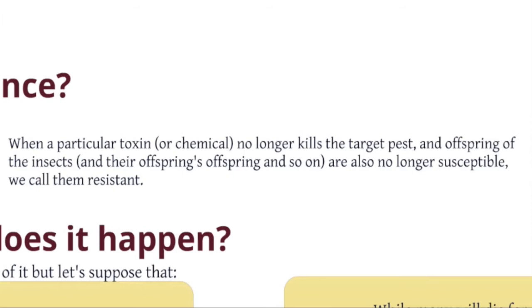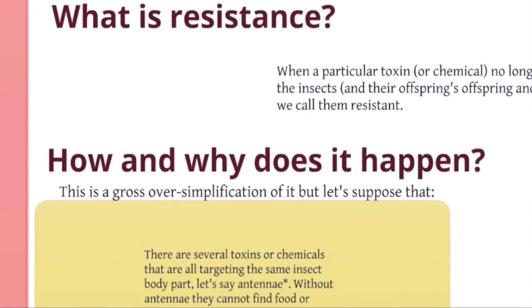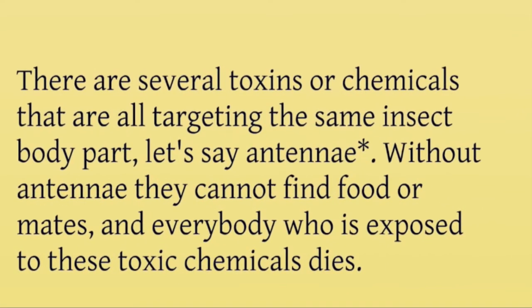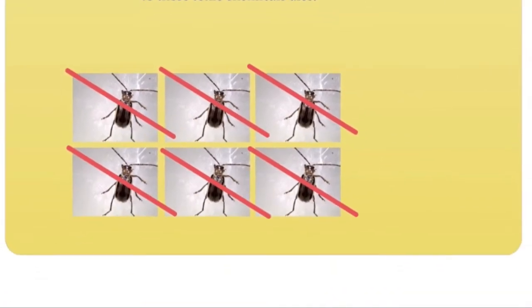So how does this happen? I'm presenting here a gross oversimplification just to illustrate the point. Let's suppose there are several toxins or chemicals targeting the same insect body part — let's say, for this example, antennae. Without antennae, insects cannot find food, they cannot find mates, and everybody who is exposed and susceptible to these toxins dies. This is the outcome when all individuals that encounter the poison are susceptible — it's complete elimination.